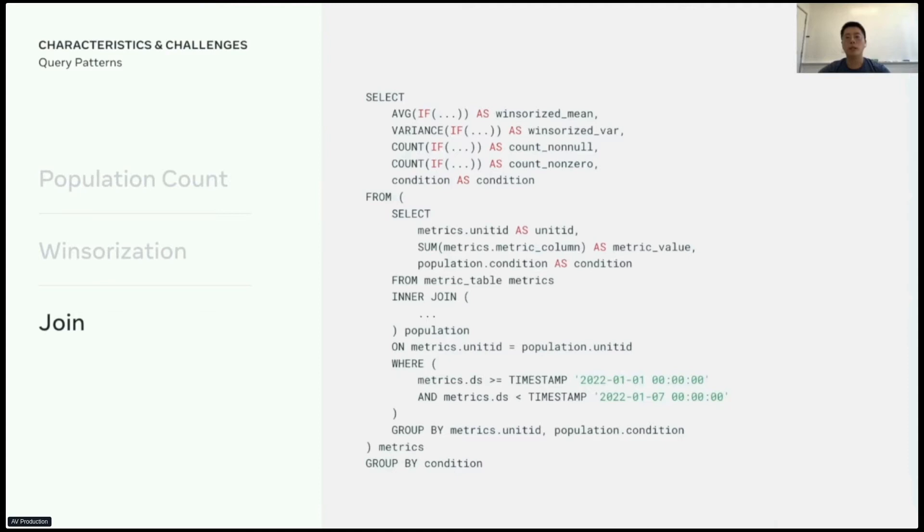The third one is a join, which is the most expensive type among all three. It calculates the averages and the variances for the test and control groups. Note that it has multiple aggregation functions with ifs inside. Also, all the queries often have a lot of date comparisons. As you can see, the query patterns in this use case are relatively fixed. That makes optimizations targeting this workload much more effective.